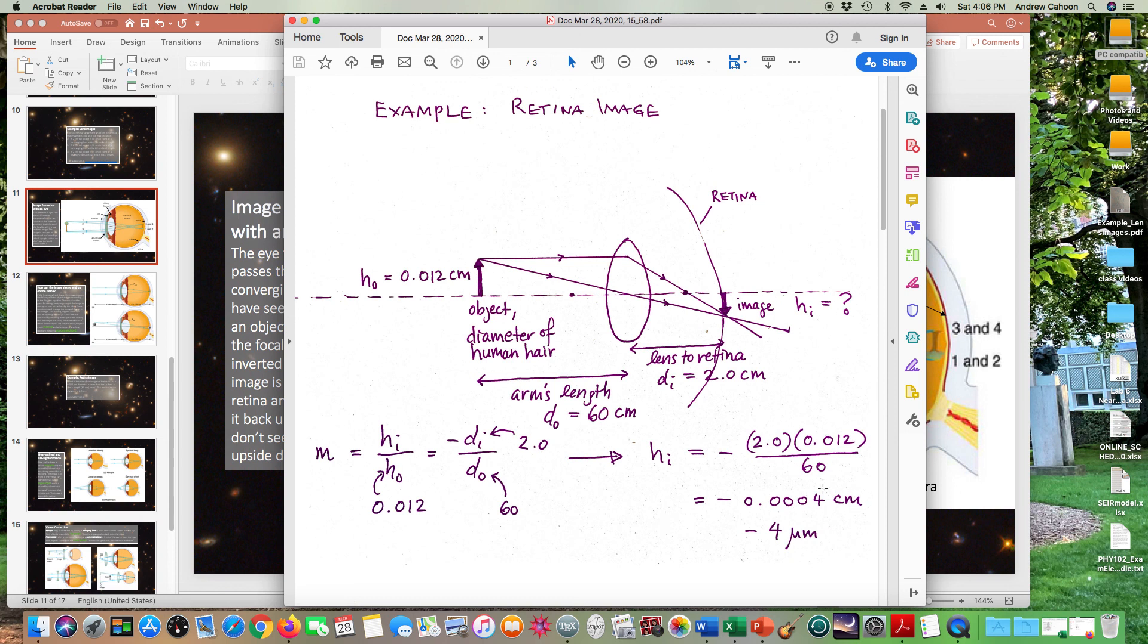If you converted all this to scientific notation, it would work out to be 4 times 10 to the minus 6 meters, which is 4 microns. So it's a negative 4 micron.